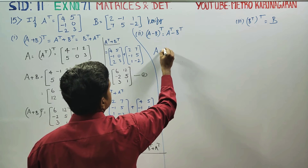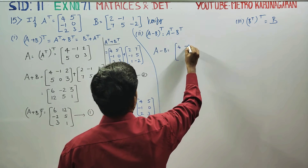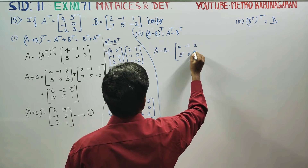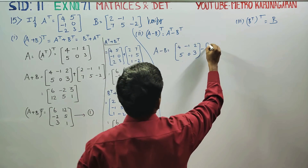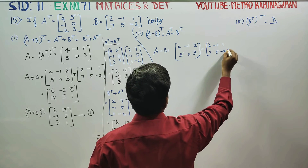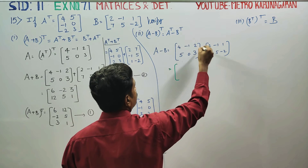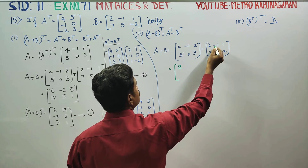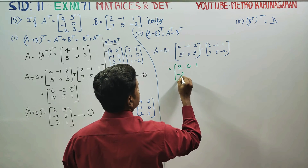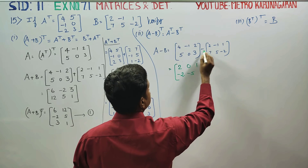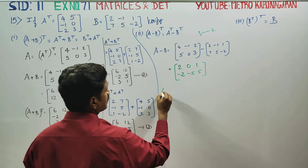Now verify: A minus B whole transpose. Starting with A minus B. A is 4, minus 1, 2, 5, 0, 3. Subtracting B: 5 minus 7 is minus 2. 0 minus 5 is minus 5. 3 minus of minus 2 is plus 2. This gives us A minus B.